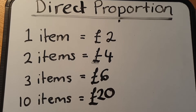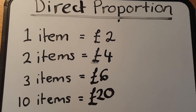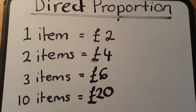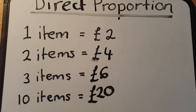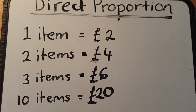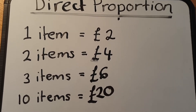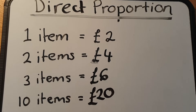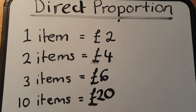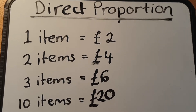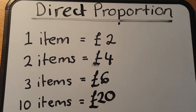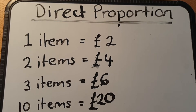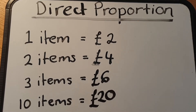Direct proportion does not take into account any special offers. So if they were selling a ten-pack for a special price that was cheaper than the twenty pounds, then that would not be in direct proportion. Direct proportion means every single individual item should cost the exact same amount of money.